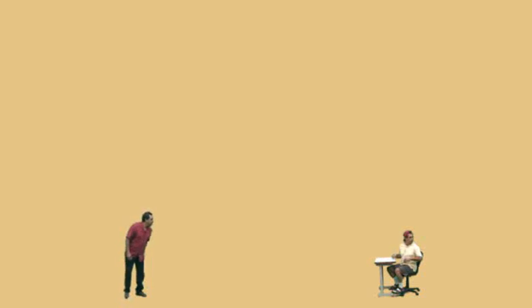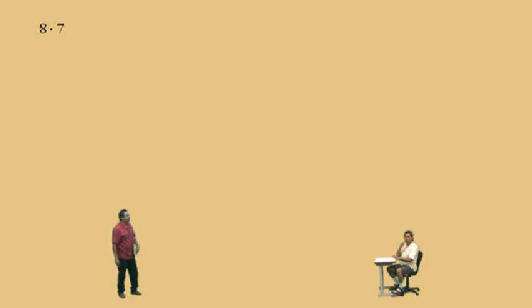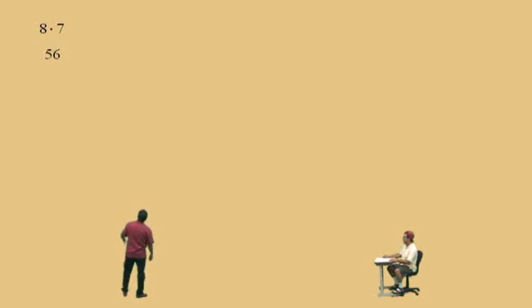Hey Charlie, been working on your times tables? Okay, we'll see. There's our first problem. What's 8 times 7? Let me help you out here. What's 8 times 5? 40. What's 8 times 6? 48. That's right. Now what's 8 times 7? 56. Very nice there, Charlie. That's right.